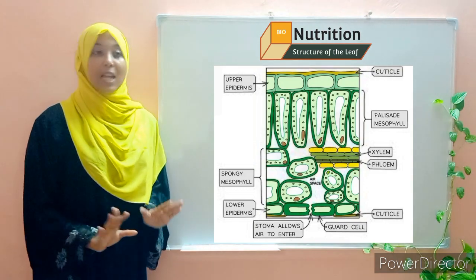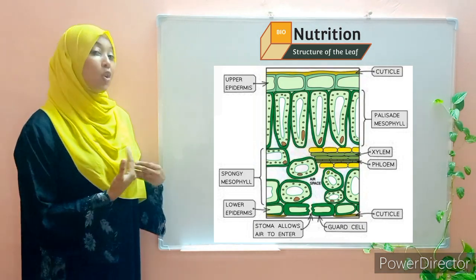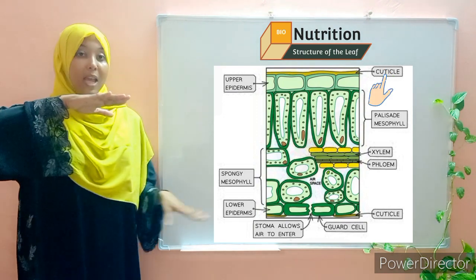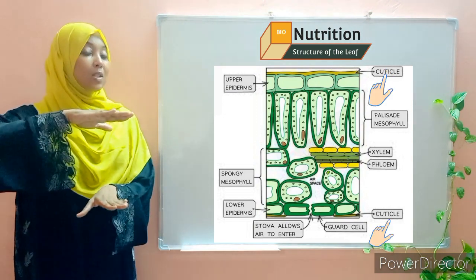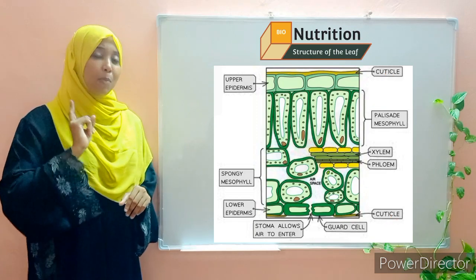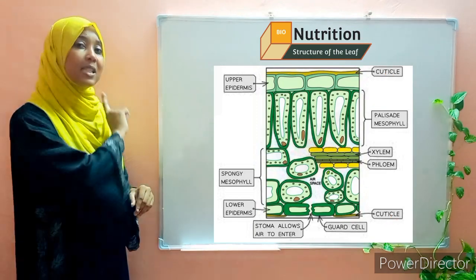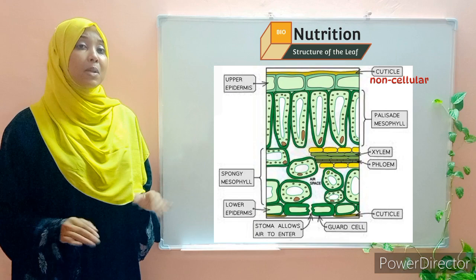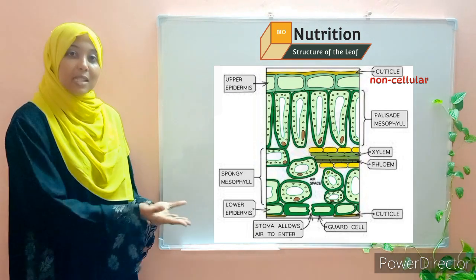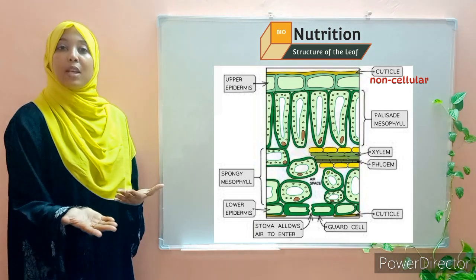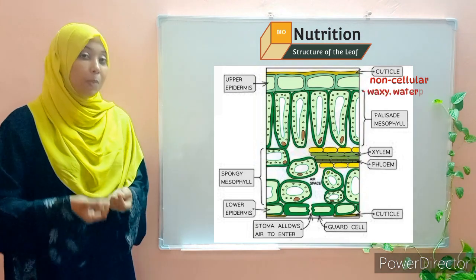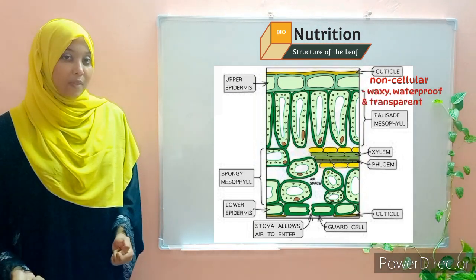Let's start with the cuticle, found on both the upper and lower surface of the leaf. The cuticle is non-cellular — it does not consist of cells; it is simply a secretion. It is a waxy, waterproof, transparent layer.